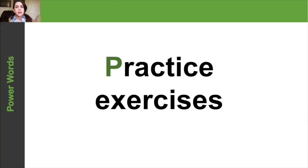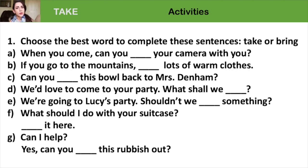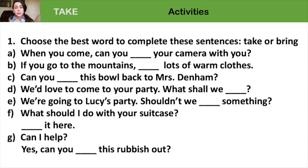Here are some practice activities with the word take. Number one: choose the best word to complete these sentences — use take or bring. Take means to move an object away from the speaker, but bring means to move an object towards the speaker. A: When you come, can you bring your camera with you? The missing word is bring — the speaker wants the camera moved towards him. B: If you go to the mountains, take lots of warm clothes — it's moving away from the speaker.